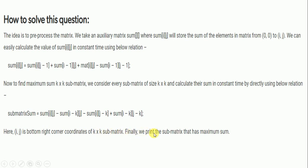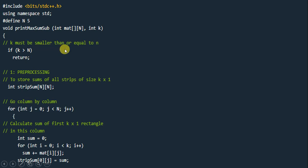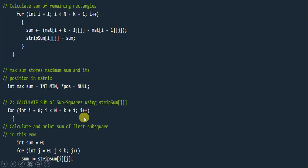Finally, we print the submatrix that has the maximum sum. This is the solution in C++ language. We have commented every step that we used, like 'k must be smaller than or equal to n' and 'pre-processing to store sum of all strips of size k×n'. The program continues here, and you can simply pause and have a look and try to understand it properly. To help you, we have commented the steps that we followed.